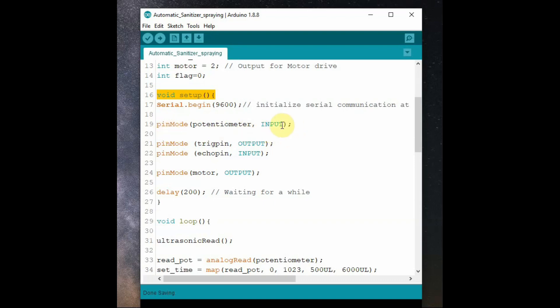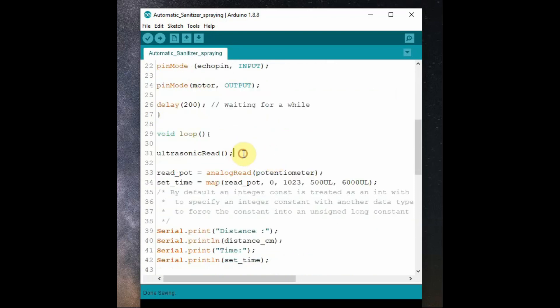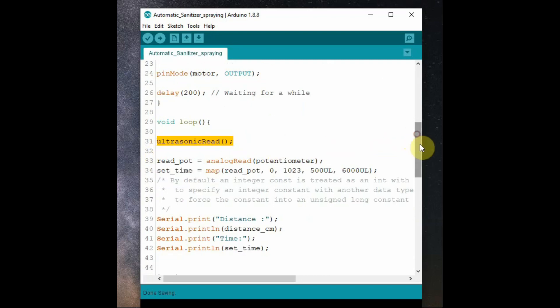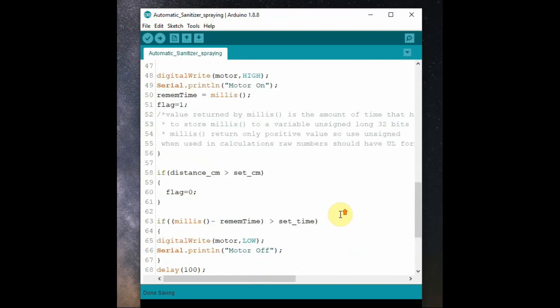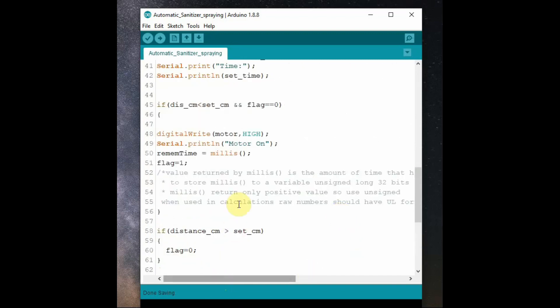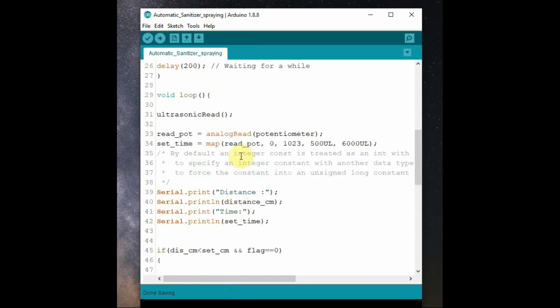In the setup, void setup, we use pinMode to declare the echo pin as input, trigger as output and motor as output. And in void loop we call the ultrasonic read function. This ultrasonic read function calculates the distance by sending a pulse on trigger and receiving it on echo. pulseIn function is used to calculate the pulse width and then the distance is calculated. The pot value is read using analogRead function and then the set_time variable is assigned the mapped value of the potentiometer value.